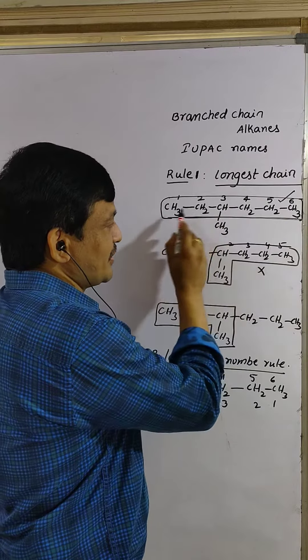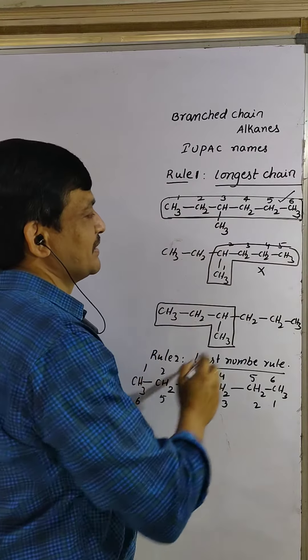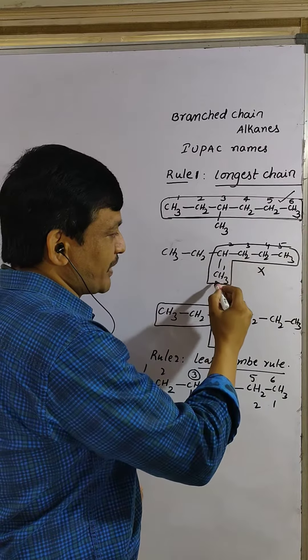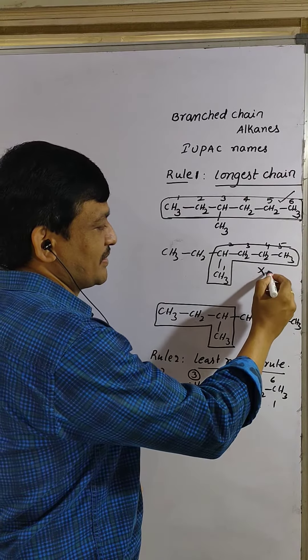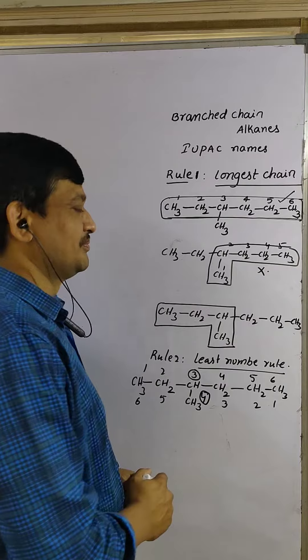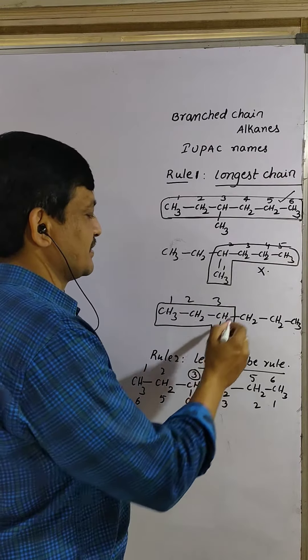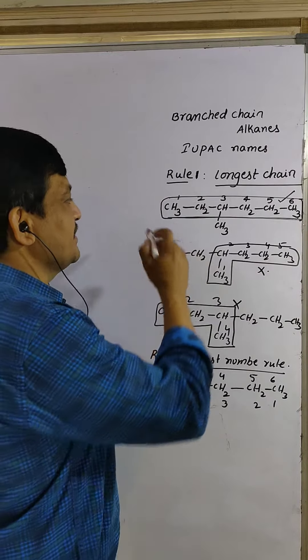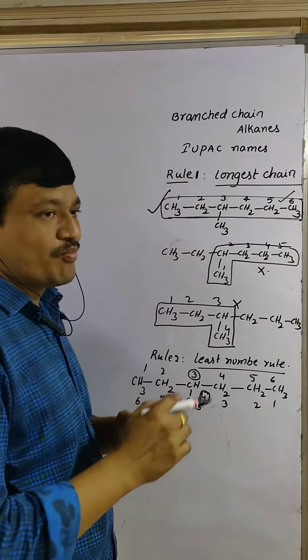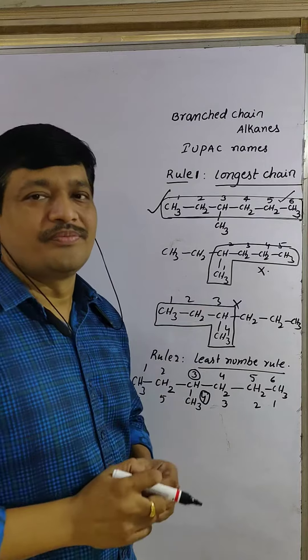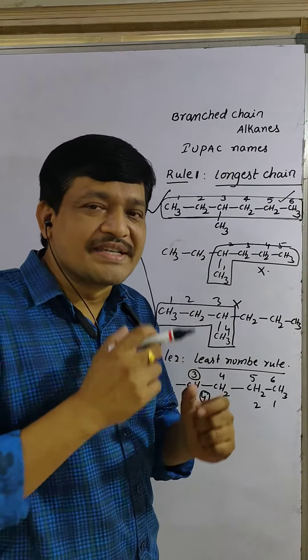Here how many carbons are there students? In the original, six carbons. In this way only five carbons are there. This is not correct, not the longest one. Here only four carbons are there. This is also not correct. Which is the longest chain? This is the longest one. First we have to consider the longest chain.